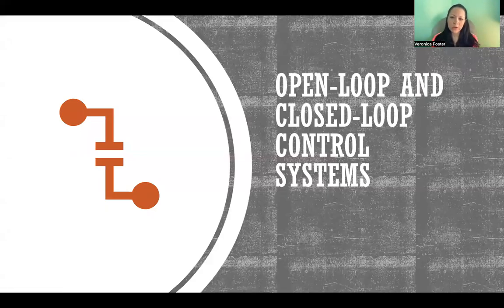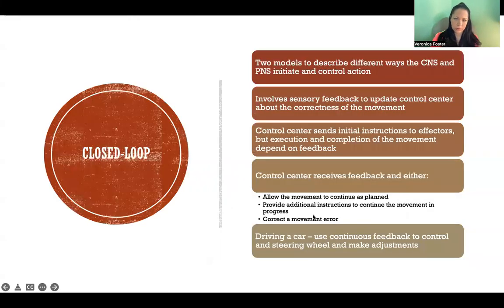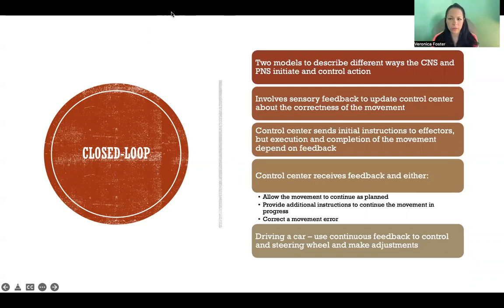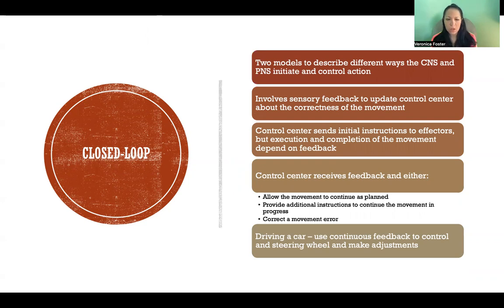Hello. In this video, I'm going to talk about open-loop and closed-loop control systems. These are two theoretical models to describe different ways that the central nervous system and peripheral nervous system initiate and control action.